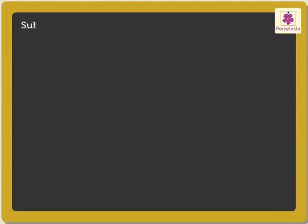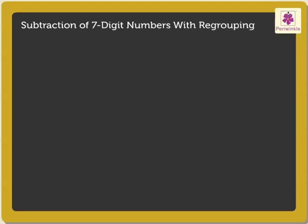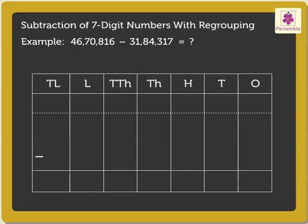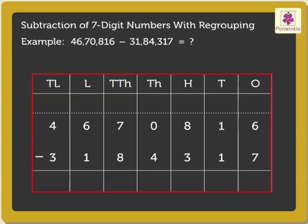Now let us look at subtraction of 7-digit numbers with regrouping. Let us subtract the numbers 46,70,816 and 31,84,317. Write the numbers 46,70,816 and 31,84,317 in the place value chart.